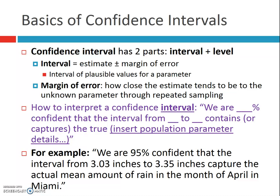Sometimes in news articles they'll mention the margin of error — like 'this percentage with a margin of error of 3%,' meaning it's within 3% above or below. If we're interpreting the confidence interval — not the level — we say: we are whatever percent confident that the interval from blank to blank captures the true insert-parameter-details-here. For example: we are 95% confident that the interval from 3.03 inches to 3.35 inches captures the actual mean amount of rain in the month of April in Miami. The key parts are: the percentage, the actual interval values, and the context.